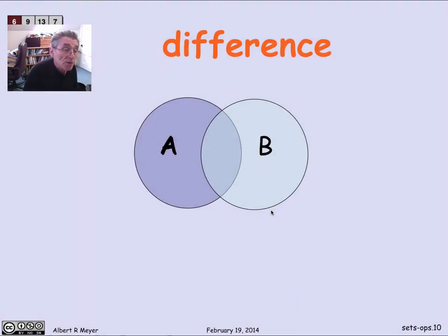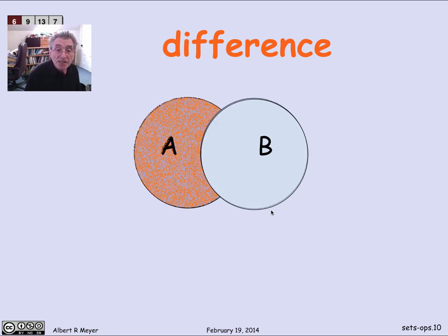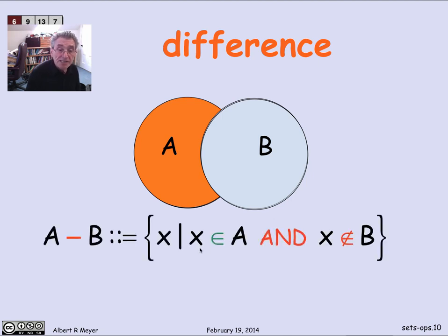So let's, just for the record, put down that last operation. The difference operation is the set of elements that are in A and not in B. So we'd write it as A minus B is the set of points that are in A and not in B. And it's illustrated by this region that's highlighted in orange.